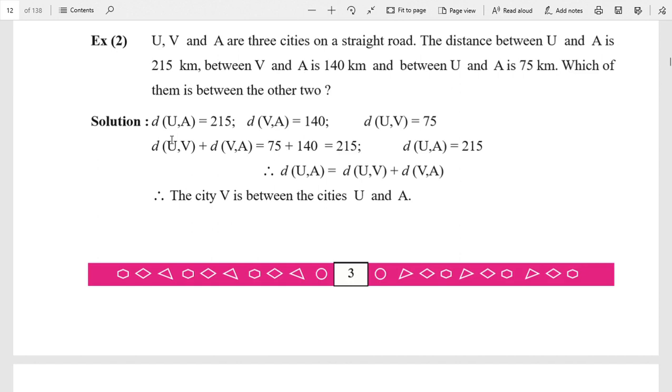The distance between U and A is d(U,A) = 215 km. Distance between V and A is 140. Distance between U and V - this is a correction, it should be U to V is equal to 75. This is the correction.